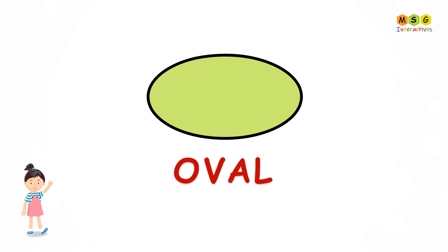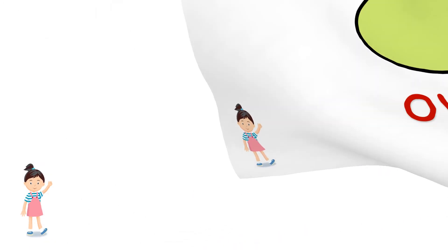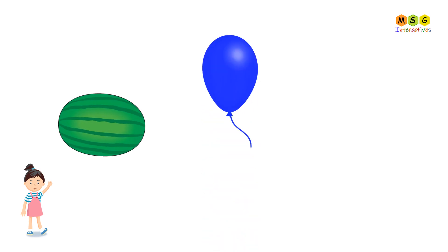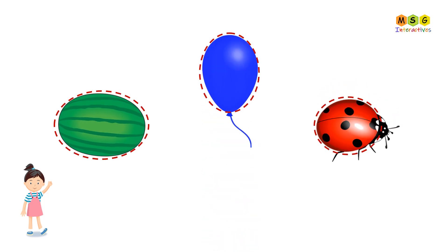Oval. Watermelon, balloon, bug are oval shapes.